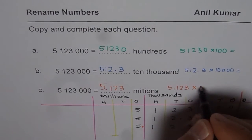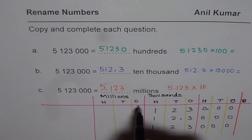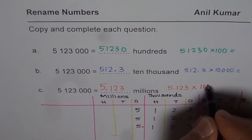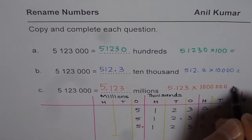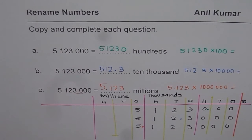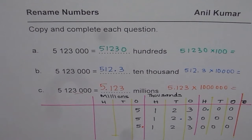One million equals one thousand thousands. When you multiply by one million you get your number back. So all these ways — 51,230 hundreds, 512.3 ten thousands, and 5.123 millions — represent the same number. That is how you can rename numbers up to a million. I hope you understand and appreciate it. Thank you and all the best.